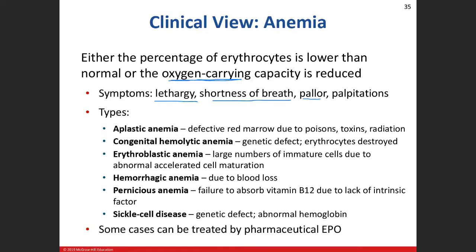Pallor means you look pale. If you're fair-skinned, you can see when blood travels to the cutaneous blood vessels — you flush when you're hot. With anemia, folks will be more pale because they don't have as many red blood cells. Palpitations relate to the heart's rhythm and how it's beating, because if you're not getting enough oxygen to the tissues, your heart pumps faster.